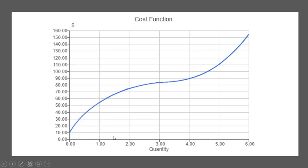Here is that cost function. The inflection point we just found is where q equals 3. Anything to the left of this point, the graph of the cost function is concave. Notice that if we have a tangent line at q equals 2, that tangent line lies completely above the graph — so it's concave. Over to the right of q equals 3, we have the convex portion. A tangent line at q equals 5 lies below the cost function, which indicates the graph is convex there.